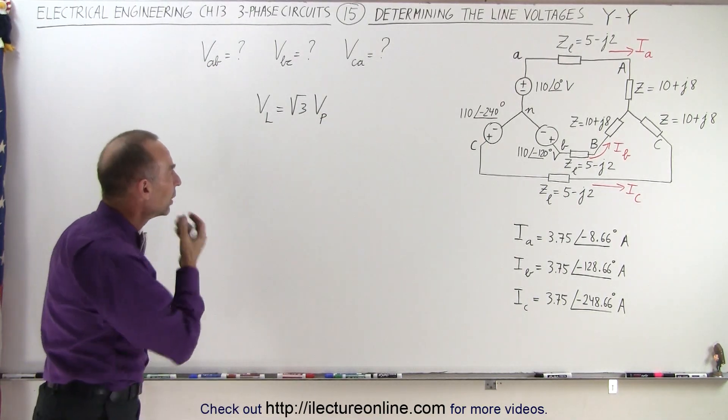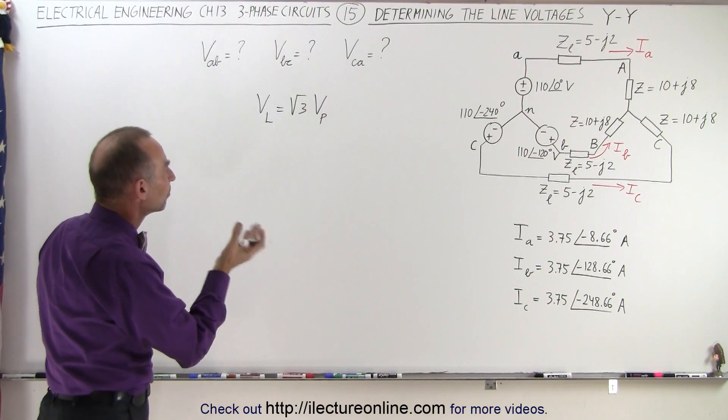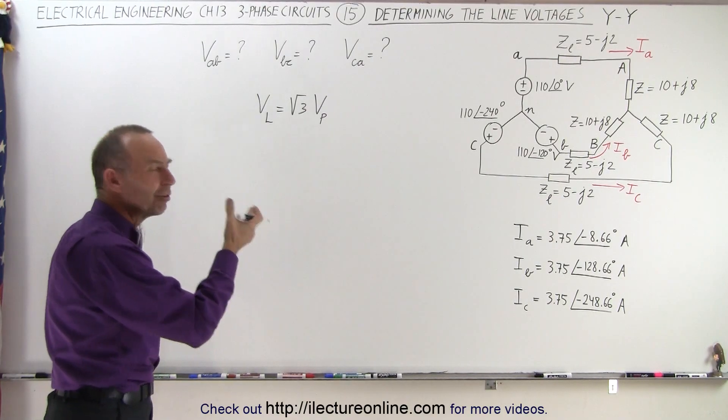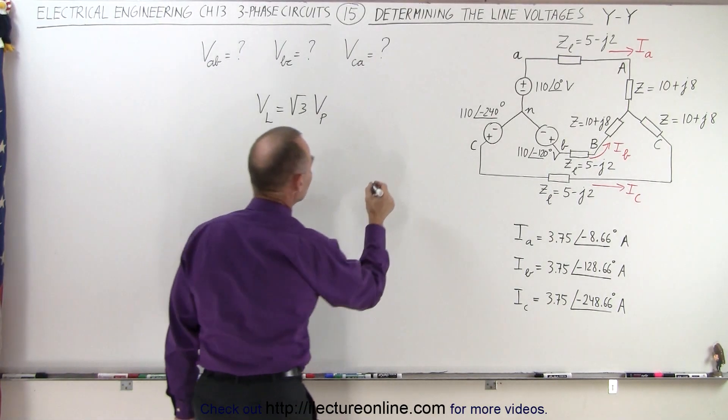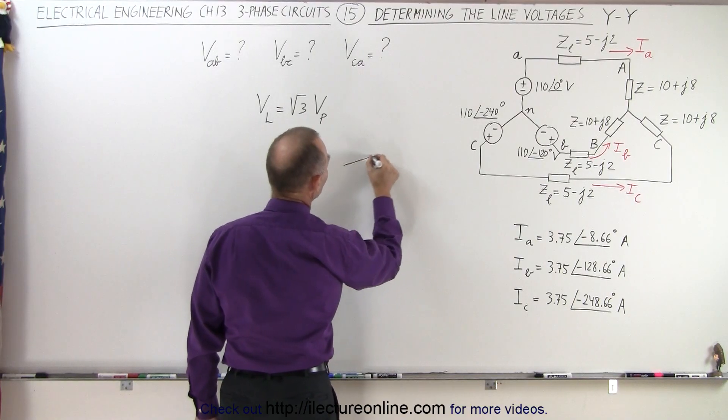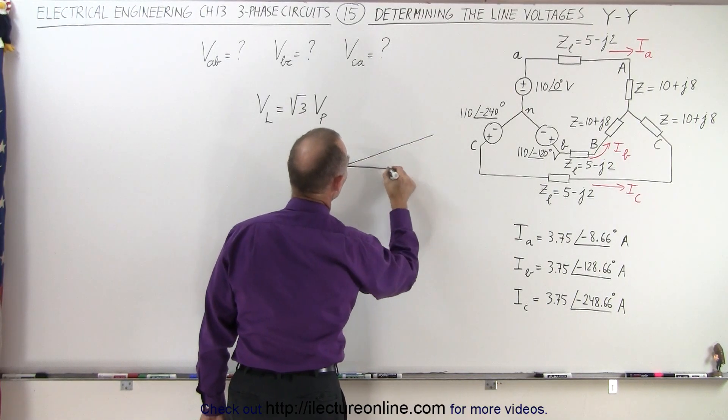And then we also know that the line voltage leads the phase voltage by 30 degrees. So in other words, if we draw a phase diagram, it's going to look like this.